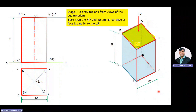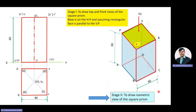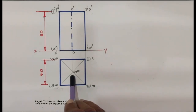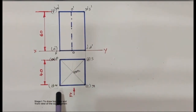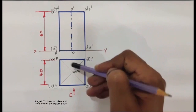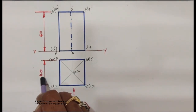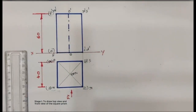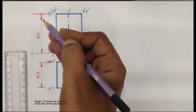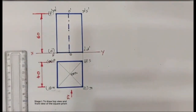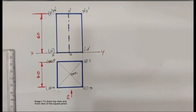Then we will move towards the second stage, which is to draw the isometric view of the square prism. This is the top view of the square prism resting on its base on HP with one rectangular face parallel to VP, and this is its related front view. The base side length is 40 mm and axis height is 60 mm. In the second stage, we will draw the isometric view of the square prism.